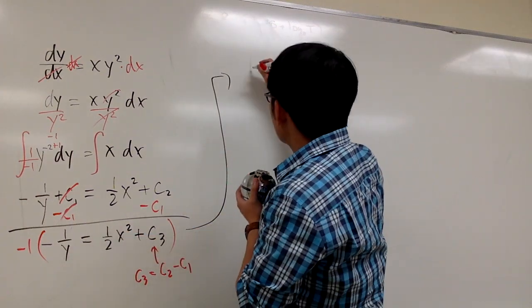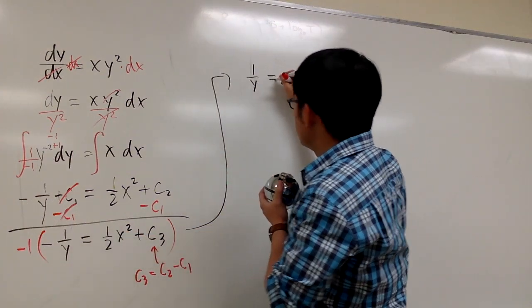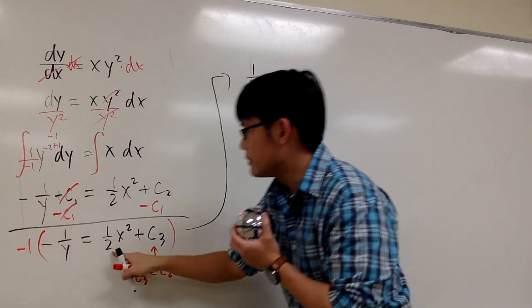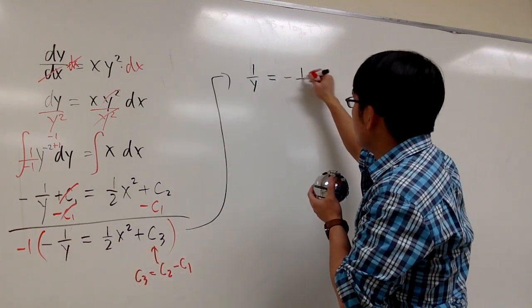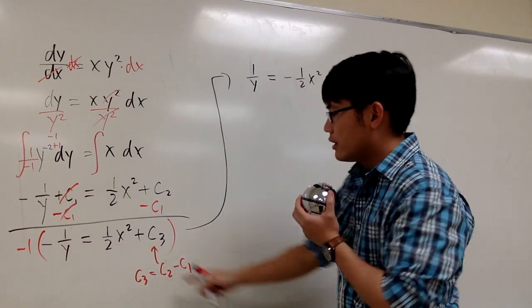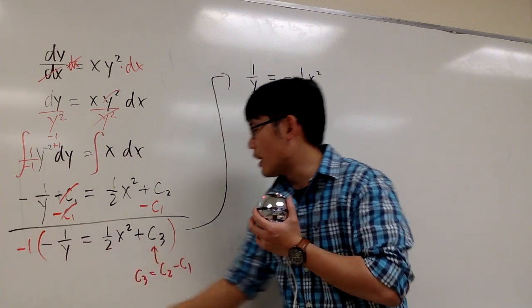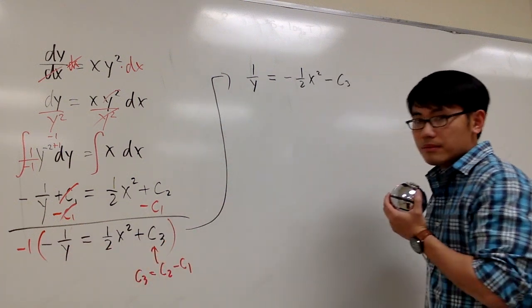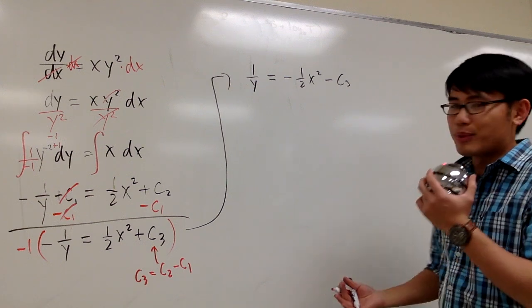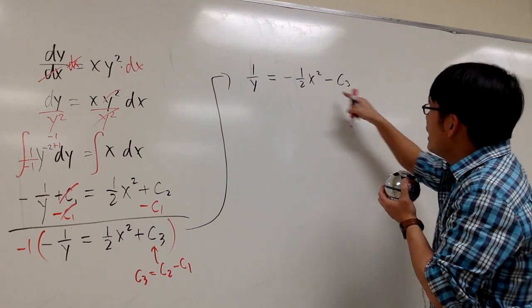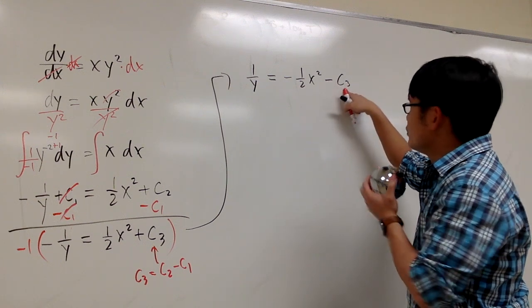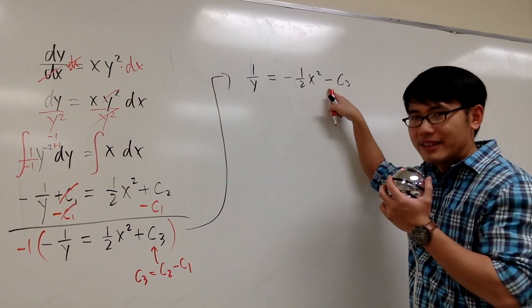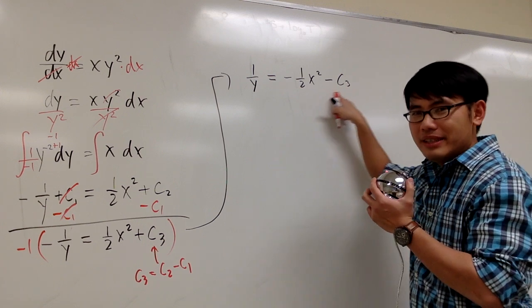That's multiplied by negative 1 throughout this expression. So I get positive 1 over y on the left-hand side. This is equal to negative 1 times this, which is negative 1 over 2x squared. And then we have negative 1 times c3. And that's like minus c3 right here. But then another problem comes. If you have a constant, which is c3, and you multiply by a negative number, this is totally fine.